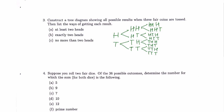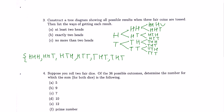So we have one, two, three, four, five, six, seven, eight possibilities. Let me list all of them: HHH, HHT, HTH, HTT, THH, THT, TTH, and TTT — that's 1, 2, 3, 4, 5, 6, 7, 8.